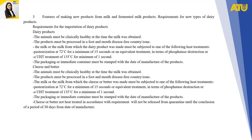Features of making new products from milk and fermented milk products. Requirements for new types of dairy products: the animals must be clinically healthy at the time the milk was obtained. The products must be processed in a foot-and-mouth disease-free country or zone. The milk from which the dairy product was made must be subjected to one of the following heat treatments: pasteurization at 72°C for a minimum of 15 seconds, or an equivalent treatment in terms of phosphatase destruction, or a UHT treatment of 135°C for a minimum of one second. The packaging or immediate containers must be stamped with the date of manufacture.